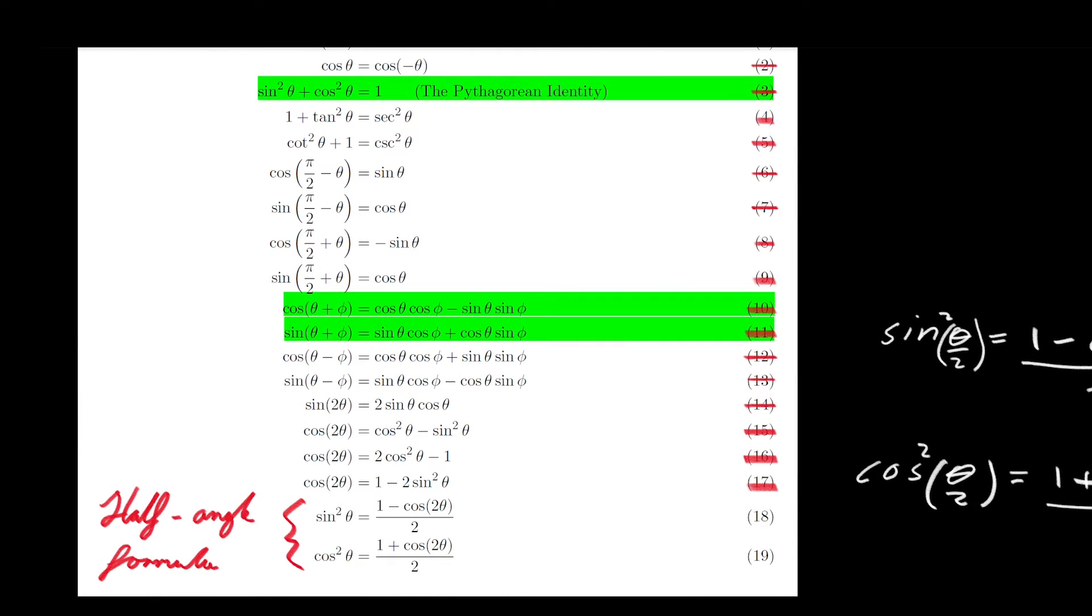Now the reason we have expressed them the way we have in our list is that it's more convenient to express them that way when you prove them from the sum formulae, which then you go on to prove the double-angle formulae, and it's from the double-angle formulae that we end up proving these two identities. So let's go ahead and prove them.